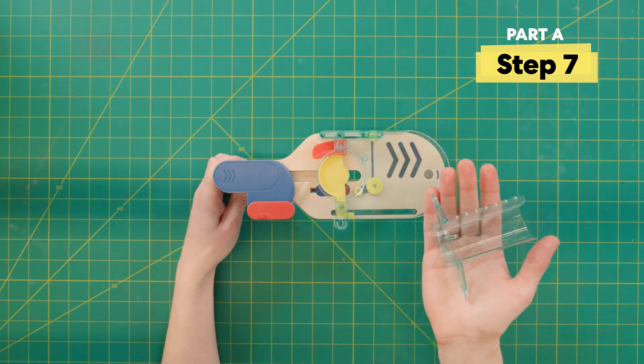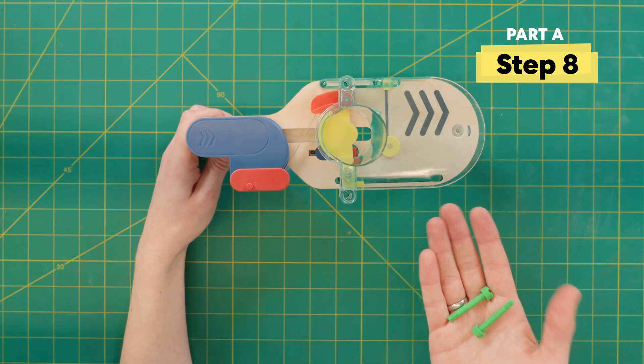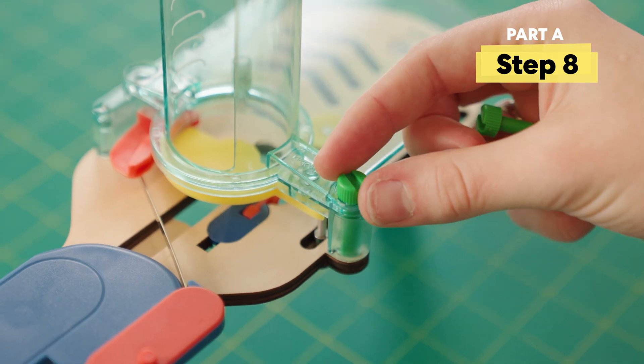Next, grab the big clear tube and set it right on top. Make sure that the opening is facing the handle. Then get two really long screws and secure it all together.